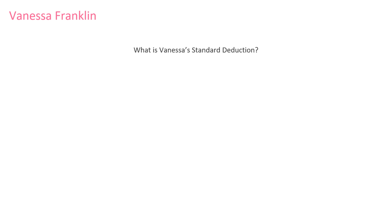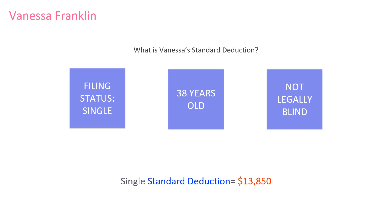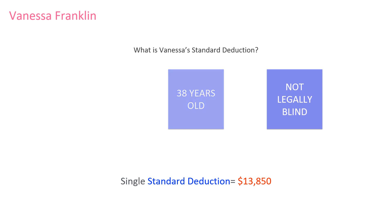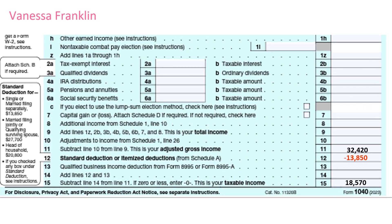So, what will Danessa's deduction amount be? Let's take a look at our facts. Her filing status is single. She is 38 years old and not legally blind. Because she's not legally blind or over 65, she'll get the normal standard deduction for her filing status. Next we take her AGI and subtract out the single standard deduction. Now her taxable income is lowered by the standard deduction. You can see the difference as it is calculated on line 15 of form 1040.